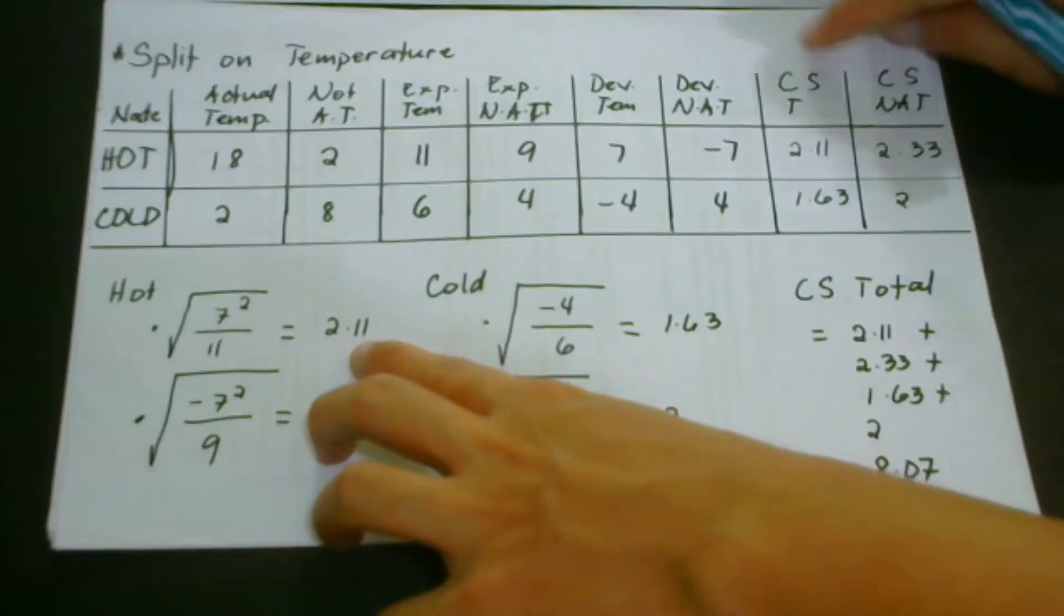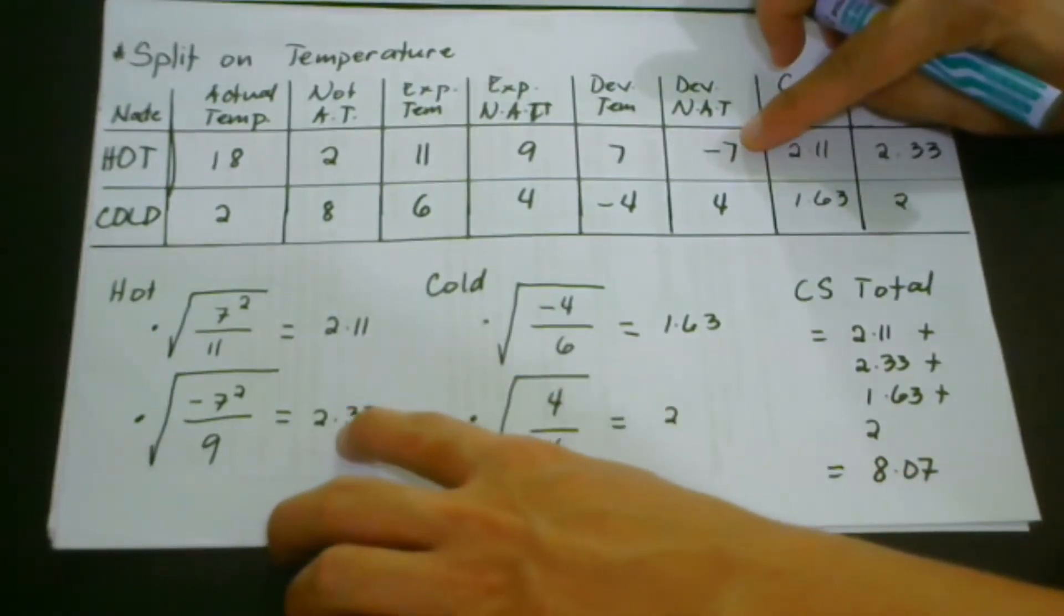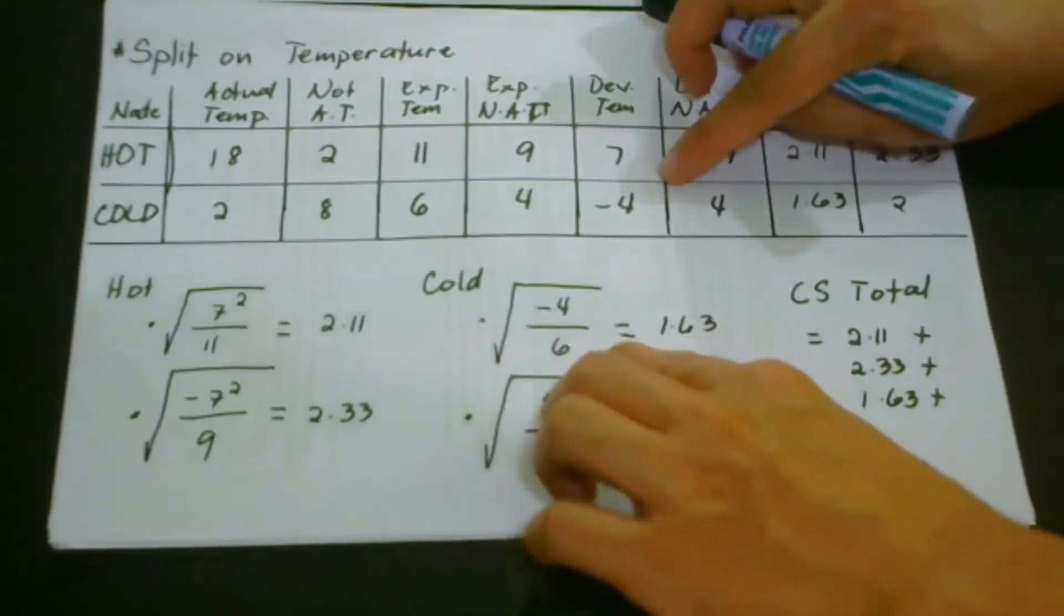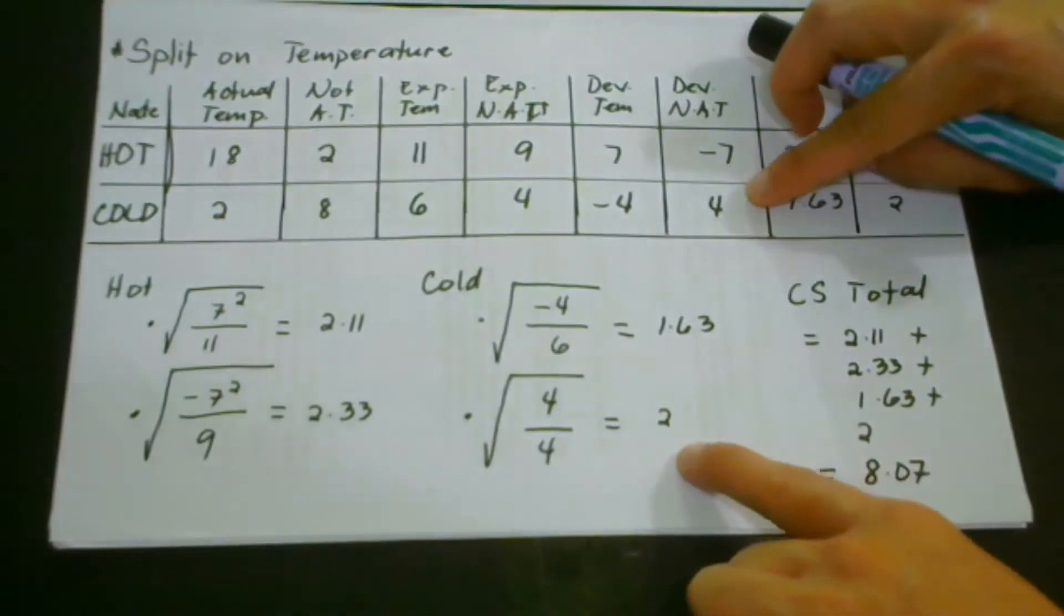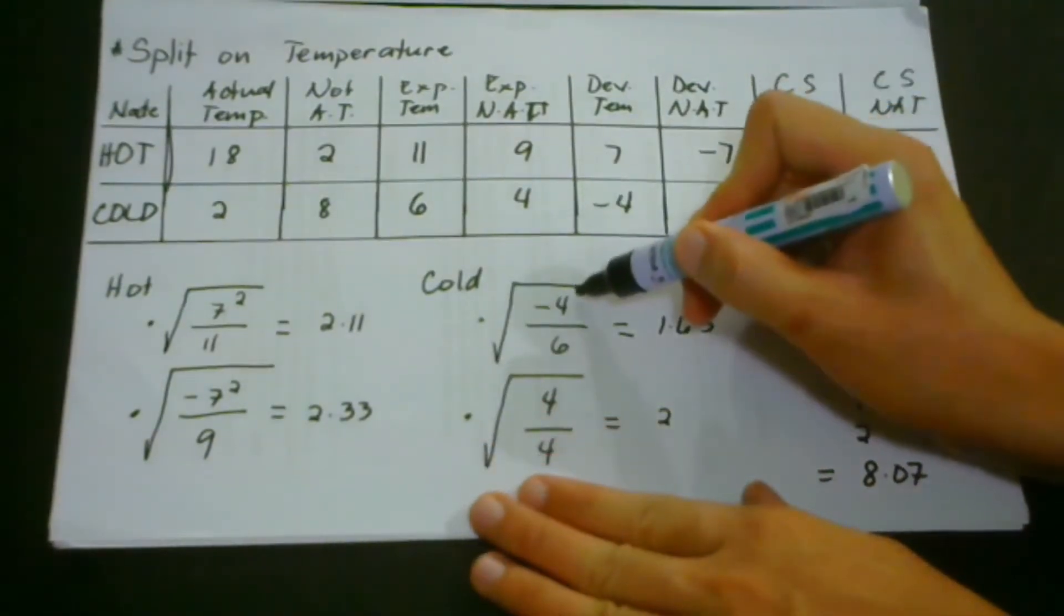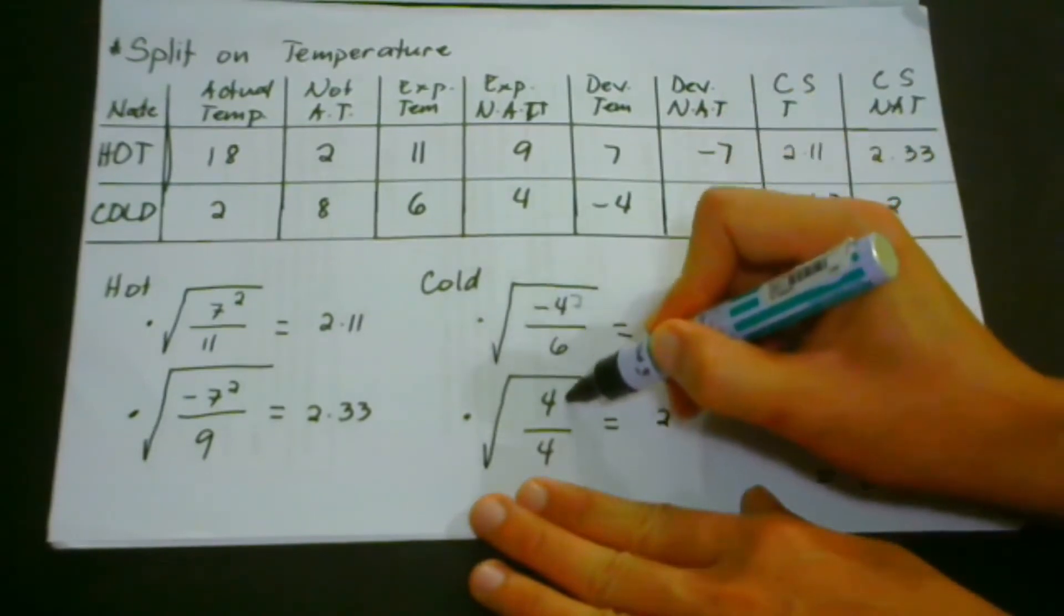And we do that for negative seven, which is 2.33. For the negative four, we have 1.63. And then for four, we have two. Sorry, I forgot to put here, it must be squared.